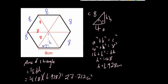And then because there are 6 of them we just need to times it by 6. So we just do 6 times 27.712, and then that would give you the area of the whole hexagon. So that would be equal to 166.272 cm squared.